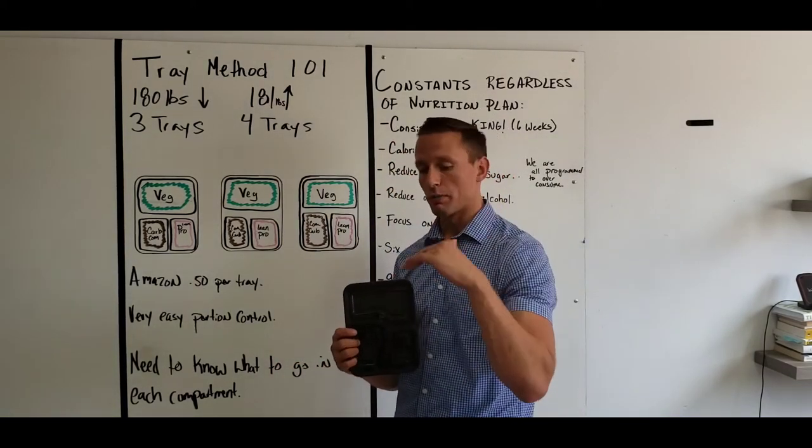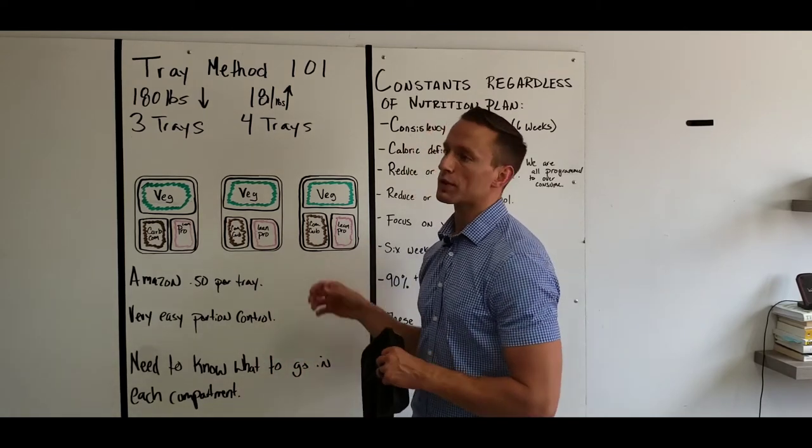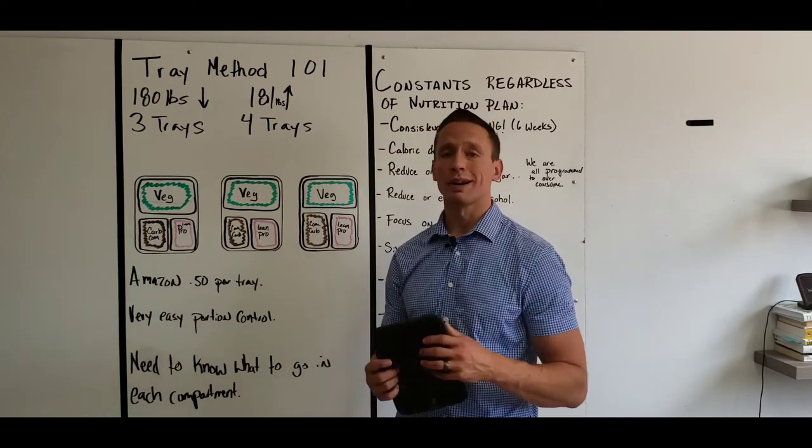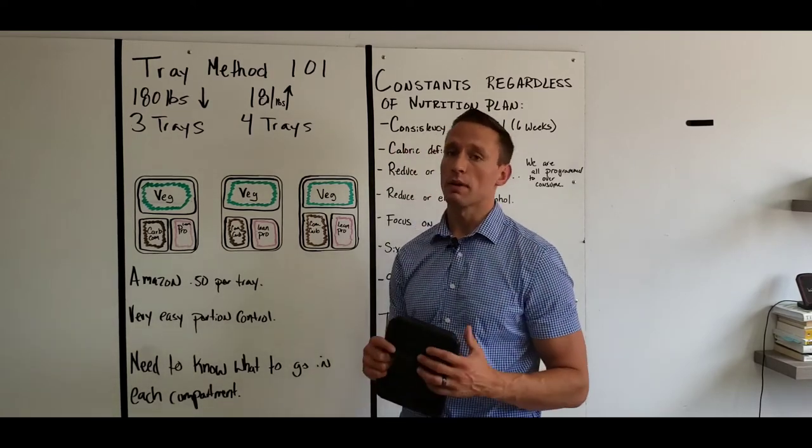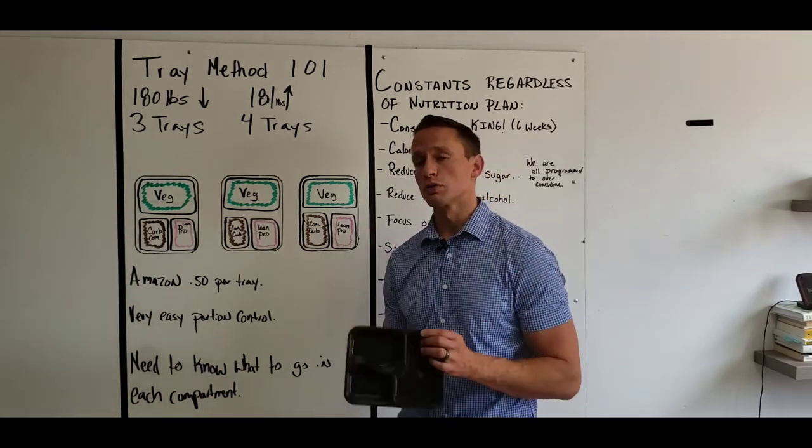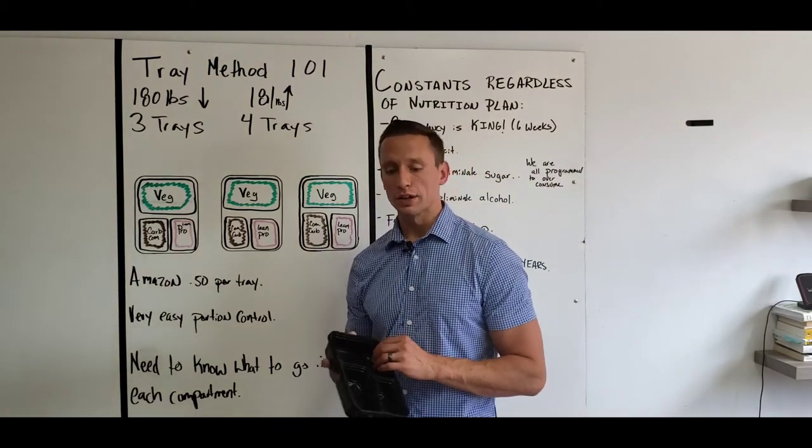So what I can do is, for everybody in the challenge, send out a list that breaks down what all these different things are. So maybe I'm assuming that you know what lean proteins are, but I can give you a list of 10 or 15. Maybe I'm assuming you know what complex carbohydrates are and I shouldn't do that. So I could send you a list. You could actually pick and choose from it.